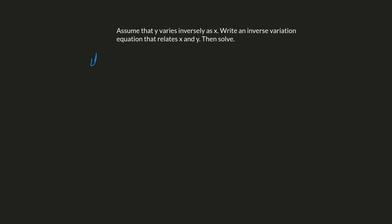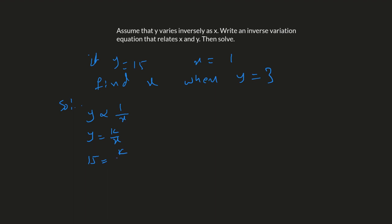Question number 12: it's given that if y equals 15 when x equals 1, you have to find x when y equals 3. Pause the video and try to figure out the problem — it's the same as question number 11. Y is inversely proportional to x, so y equals k over x. Plug in y equals 15 and x equals 1, so k equals 15. The equation is y equals 15 over x.